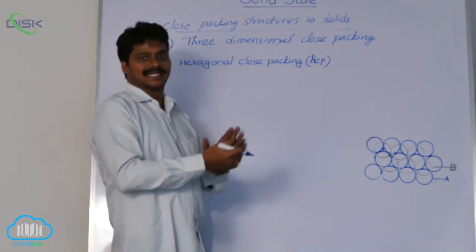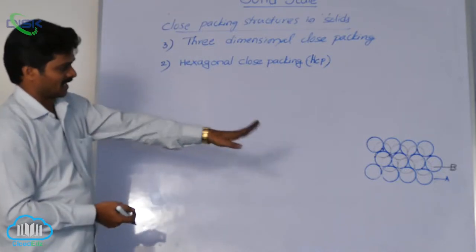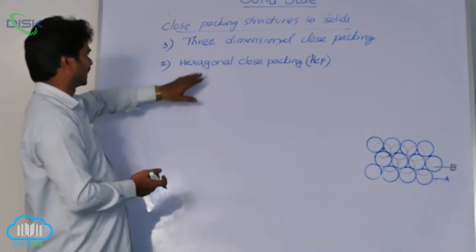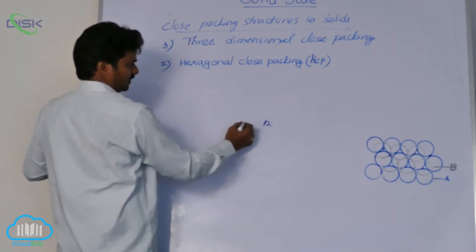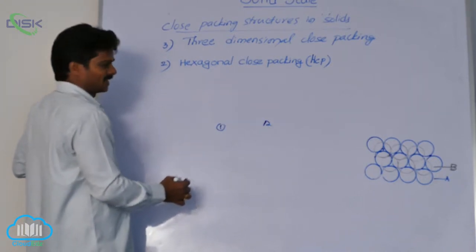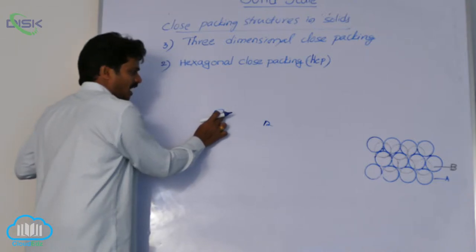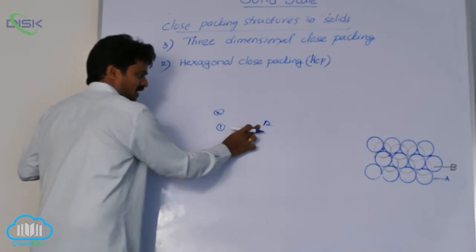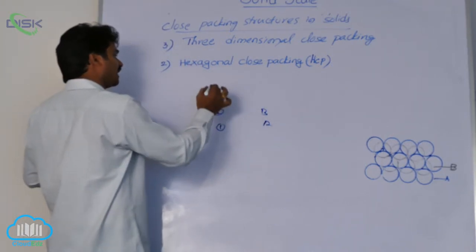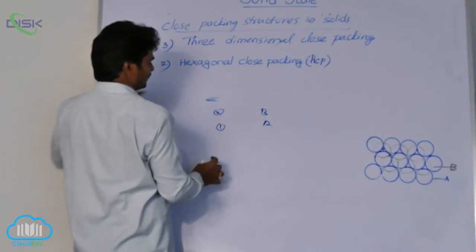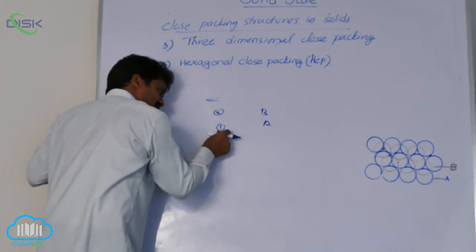Now place the third layer such that the spheres of the third layer are exactly aligned with the first layer spheres. This type of arrangement gives hexagonal close-packing. The first layer is the hexagonal close-packed layer. Place the second layer over it such that its depressions are occupied by the spheres of the second layer — that is layer B. Then place the third layer such that the spheres of the third layer are exactly aligned with the first layer.